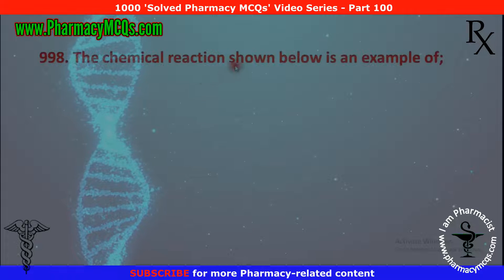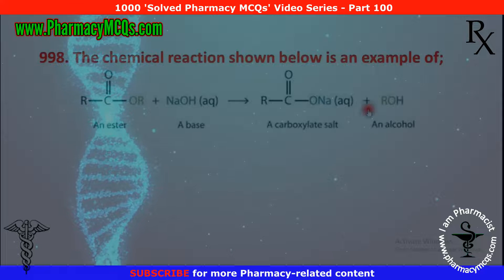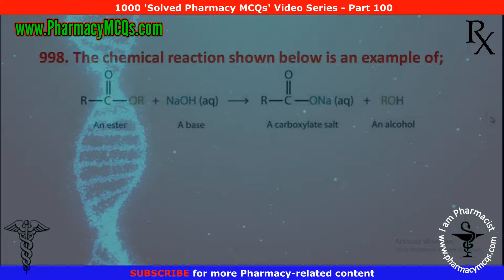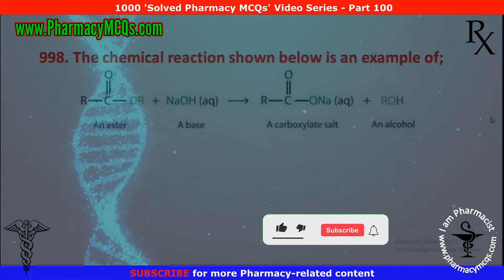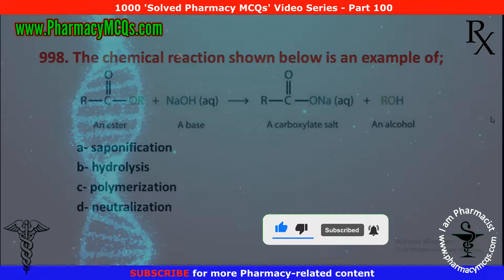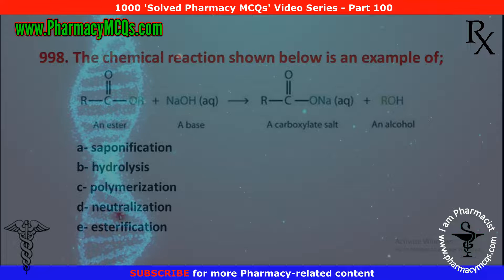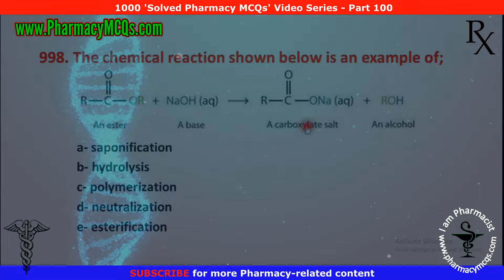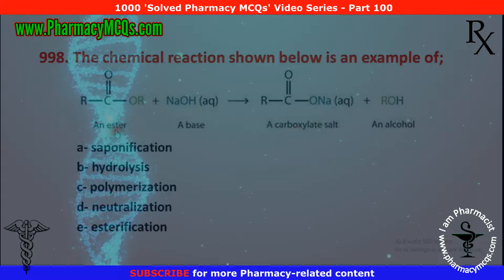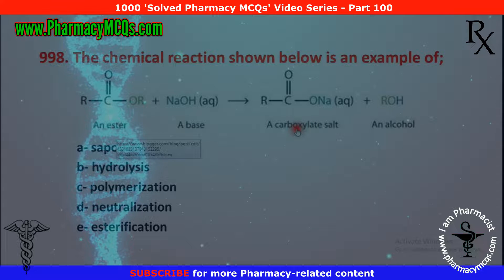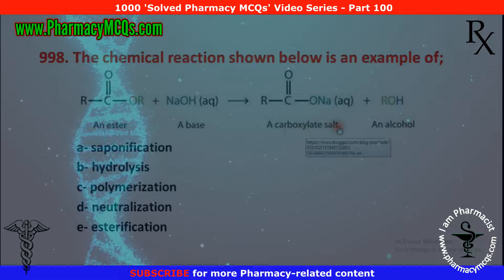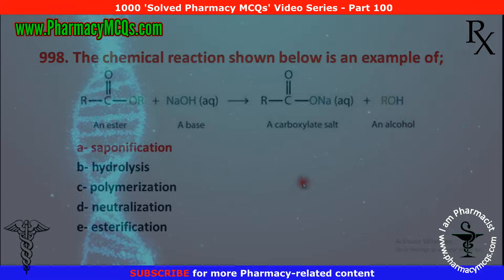Next MCQ: the chemical reaction shown below is an example of what? In this reaction, an ester is reacting with a base and a carboxylate salt and alcohol are produced. Options are: saponification, hydrolysis, polymerization, neutralization, and esterification. It is a saponification reaction because a soap is formed — combining an ester with a base produces soap, which is the carboxylate salt here. So option A is correct.